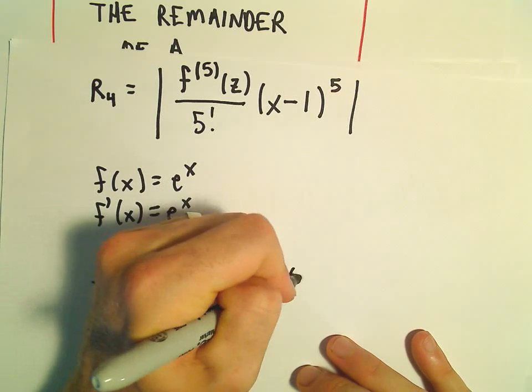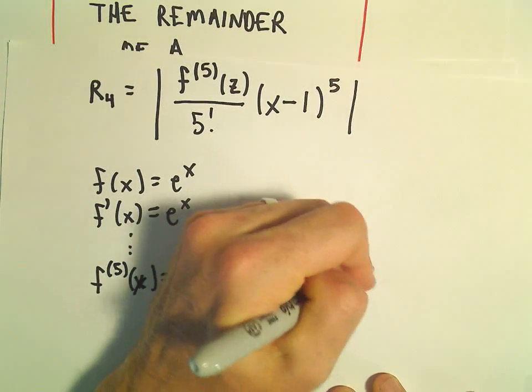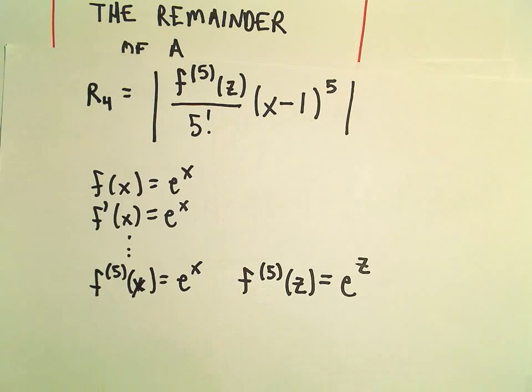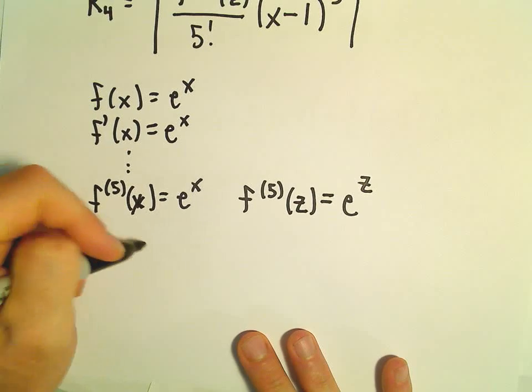That means the 5th derivative evaluated at z. And now that's all we have to do is just simplify that and plug that in and simplify the expression.